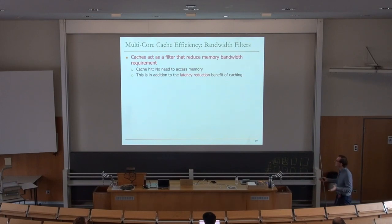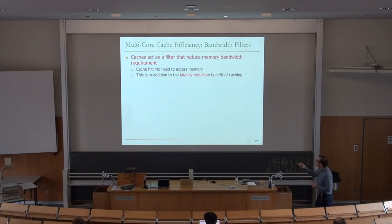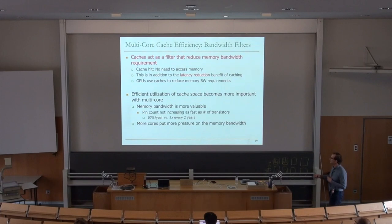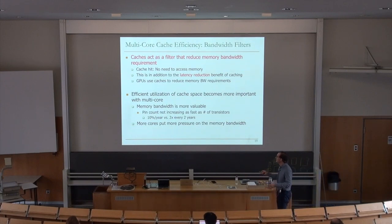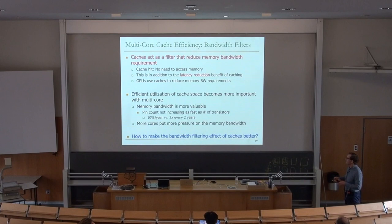NVIDIA added caches to GPUs to reduce bandwidth need, even though many GPU applications don't have excellent locality. Efficient cache space utilization becomes more important with multi-core because memory bandwidth is more valuable: bandwidth increases about 10% per year whereas transistor count doubles roughly every two years, and more cores put pressure on bandwidth. That's why we'll discuss efficient cache utilization.